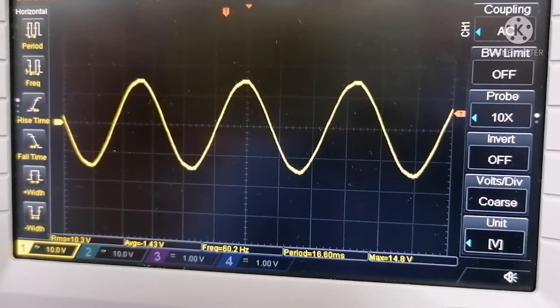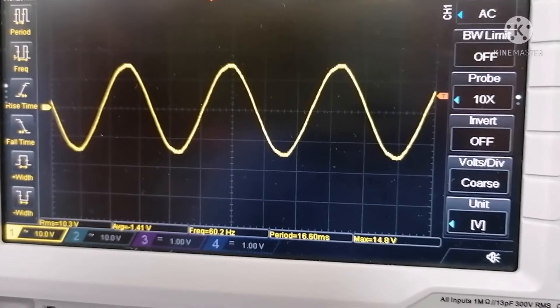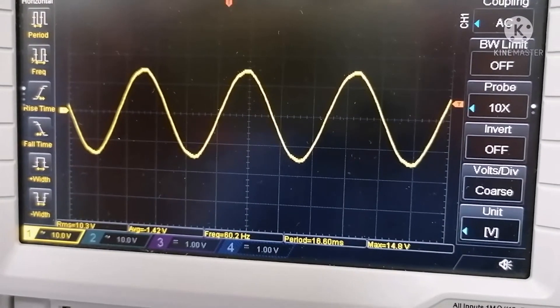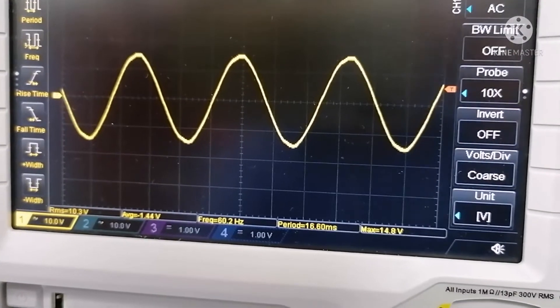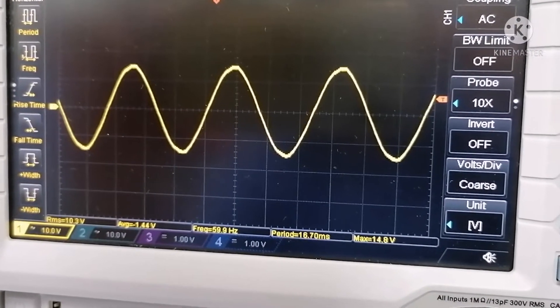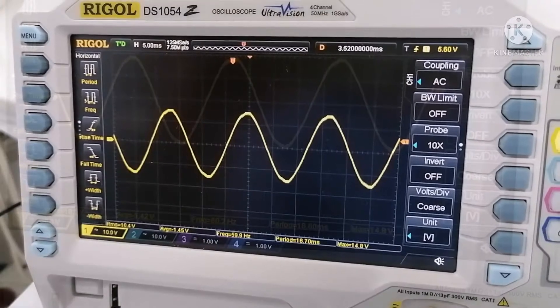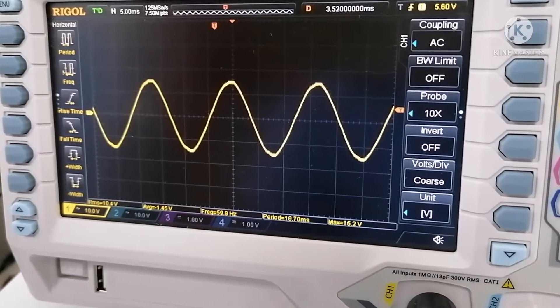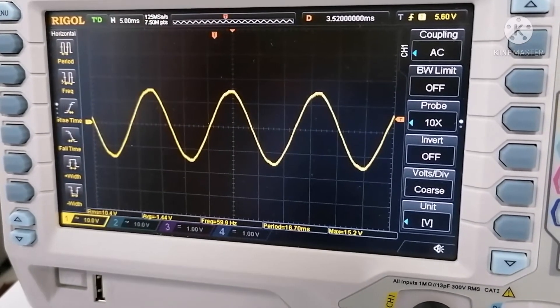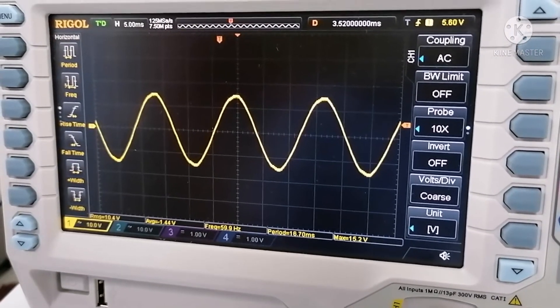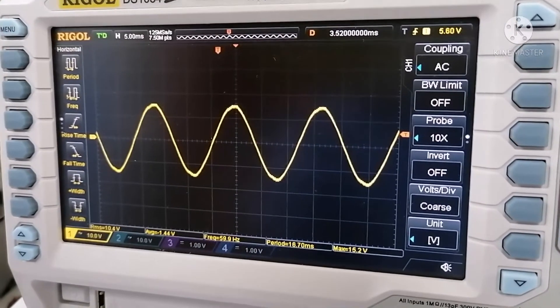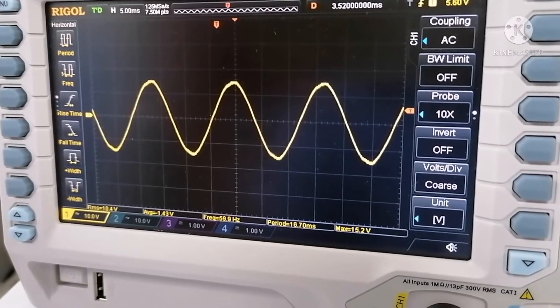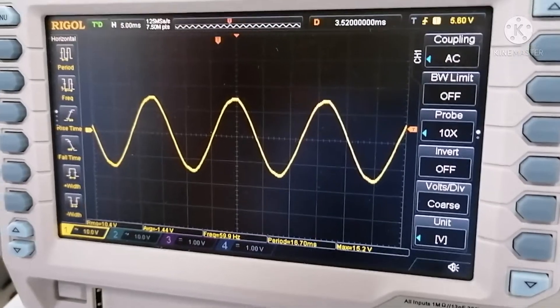This is just to show you the input of the voltage rectifier. Now we will proceed to the output of the voltage rectifier. I think it is not necessary to elaborate my explanation about the oscilloscope because my topic is about bridge rectifier.